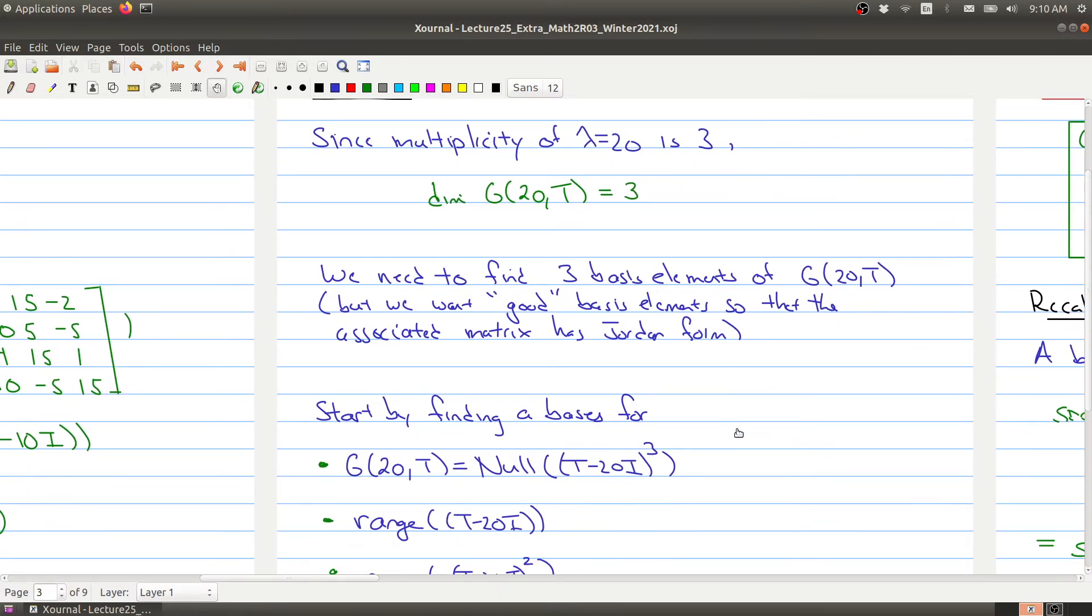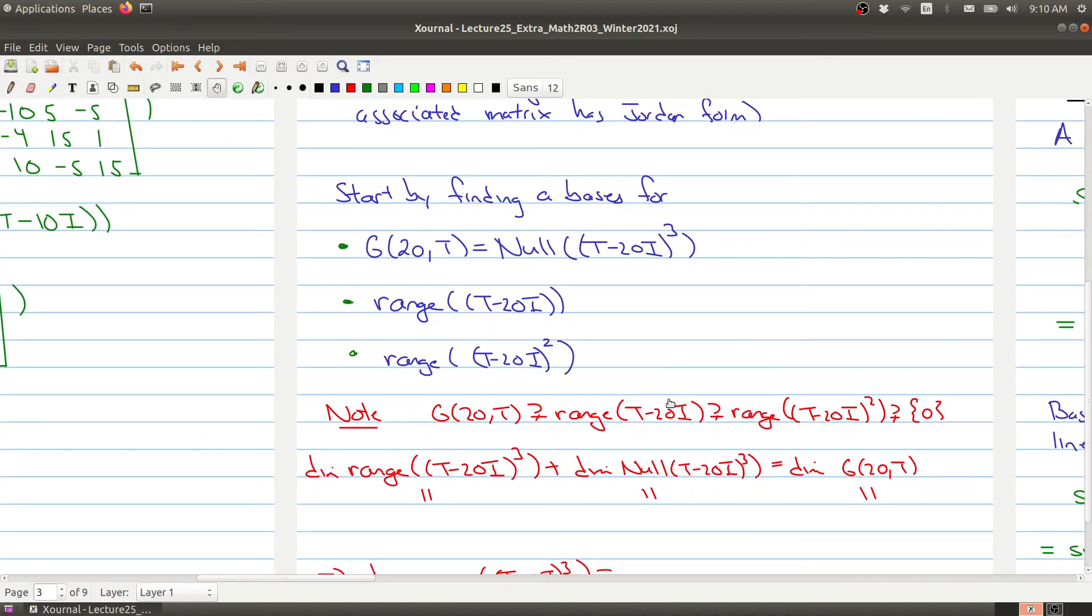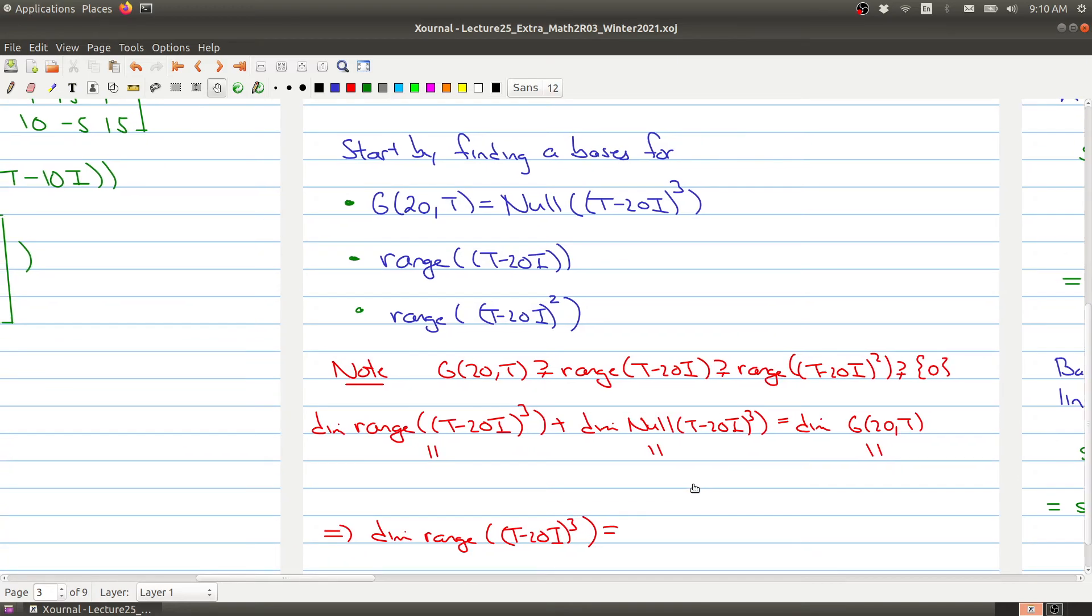And so what we need to do is we need to find bases for, first of all, the whole space. So that's just the null space of the matrix. Then we need to find a basis for the range of this space, or the range of the operator, t minus 20i. And then we need to find a basis for the range of t minus 20i squared. And why these particular spaces?